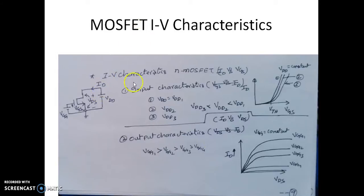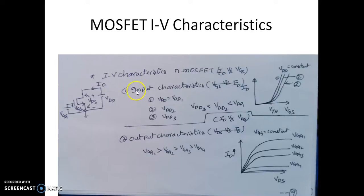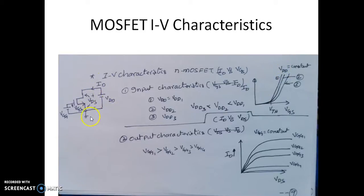Now we look at MOSFET IV characteristics. There are two characteristics. The first is the transfer characteristics, where we plot ID versus VGS. This is shown for different values of VGS from 0 to above the threshold voltage, for a constant VDS. We plot curves for different values of VDS.